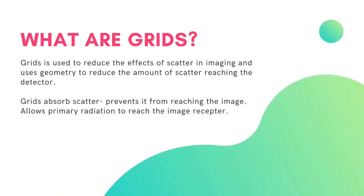What are grids? Grids are used to reduce the effect of scatter in imaging and use geometry to reduce the amount of scatter reaching the detector. Grids absorb scatter, prevent it from reaching the image, and allow primary radiation to reach the image receptor.